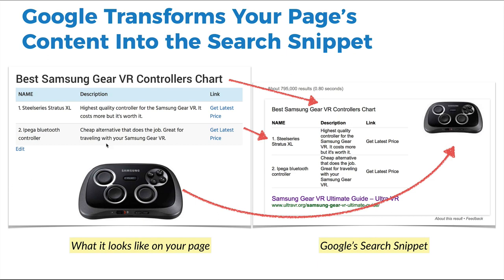Here's a real-world example. This is a webpage I put together where we have the best Samsung Gear VR controller chart, formatted in a very specific way. This is what it looks like on your page. The way Google takes your information and creates a search snippet — it took the title from the webpage and put it as a title, took the item names, put the names, same thing with the table, and even took the same image. If you feed it the right information, it's very easy and predictable to get Google to show that on the search results.